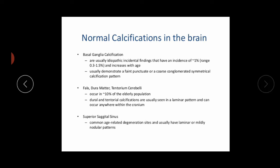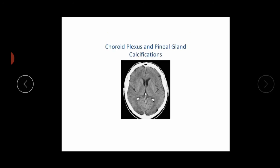The superior sagittal sinus shows common age-related degeneration and usually has a minor or mildly nodular appearance. This image demonstrates choroid plexus and pineal gland calcification, showing calcification of the cerebral eye.